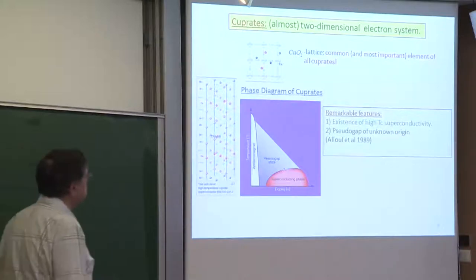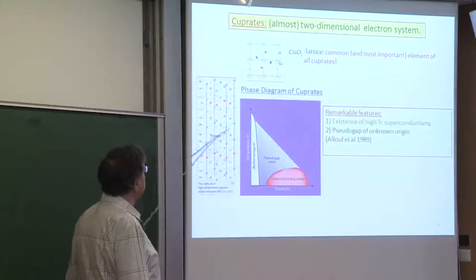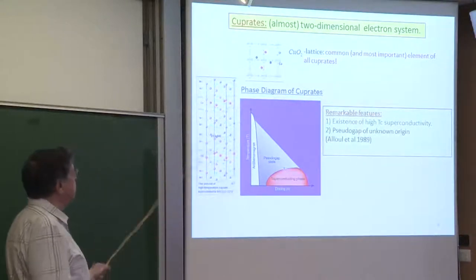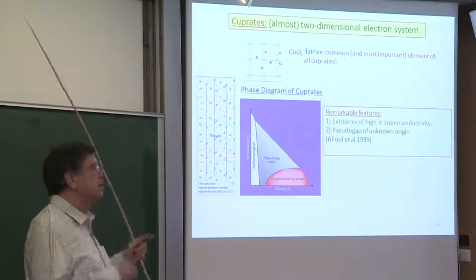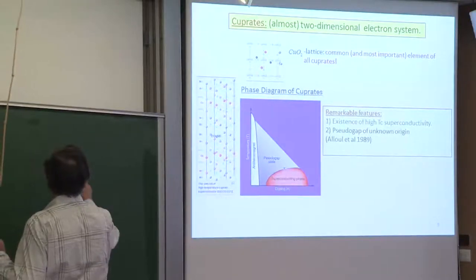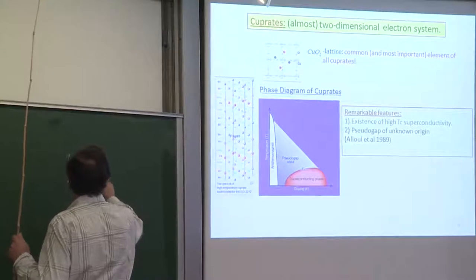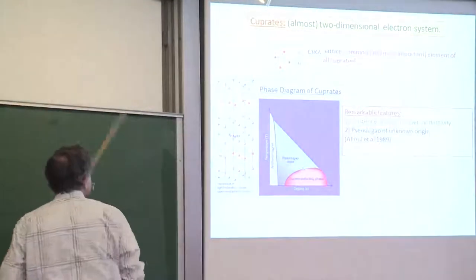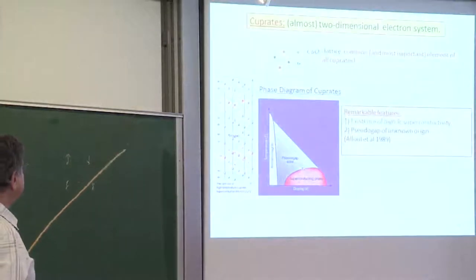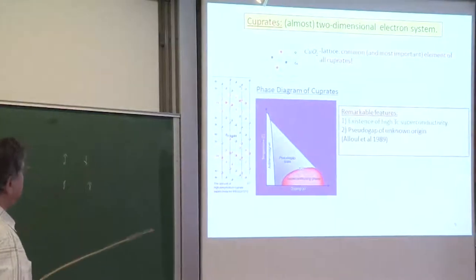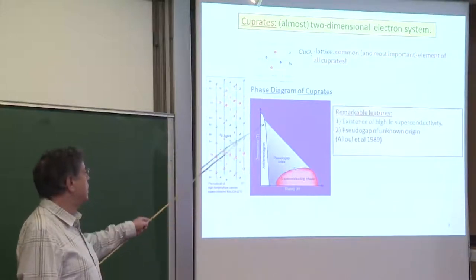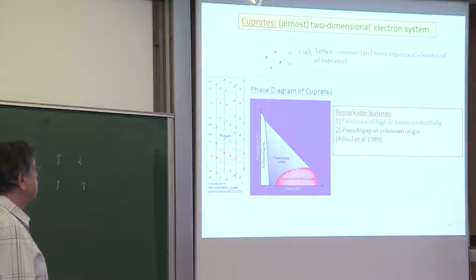If you do not dope these atoms you have an antiferromagnet — a very good antiferromagnetic state with quantum fluctuations and so on. Doping means adding more holes or electrons; this is just a half-filled band. This antiferromagnet is something like spin-up and spin-down on copper atoms, all forming an antiferromagnetic state at small doping.